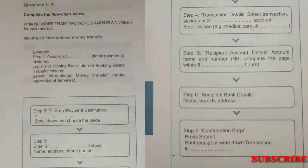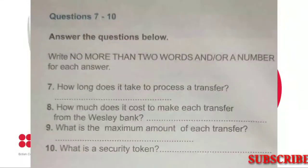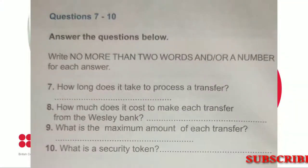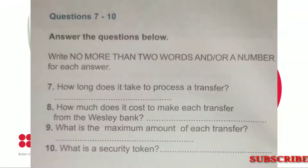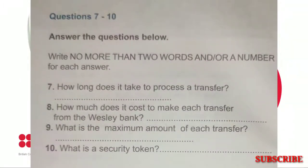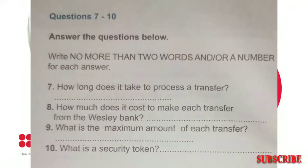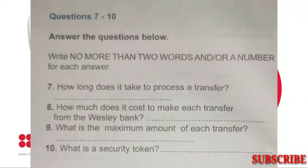Before you hear the rest of the conversation, you have some time to look at questions 7 to 10. When can my family expect the money? Will they get it within the next five days? It takes three days to process, but of course we can't be responsible for any delays arising from the recipient bank. I understand. And is there a charge for internet transfers? When I did this through a teller at the bank last year, I was charged $40. It does cost more to use a teller, but Wesley Bank will only deduct $30 from your account per online international transaction.